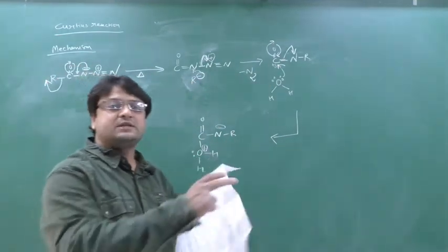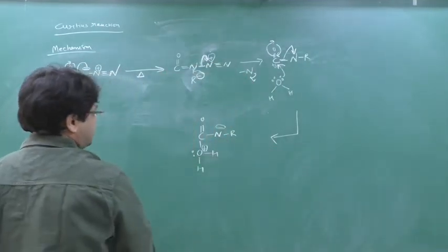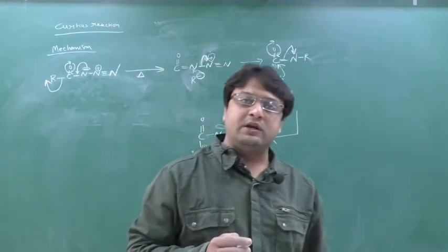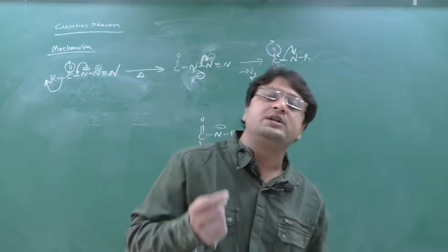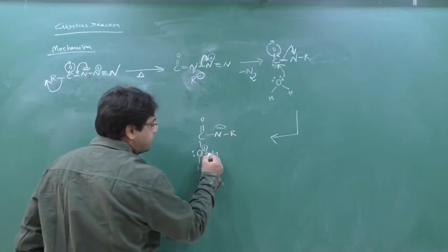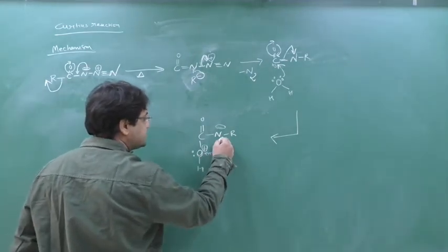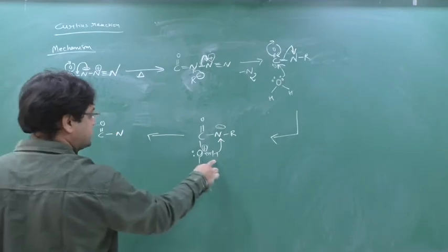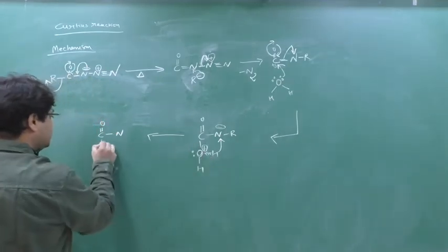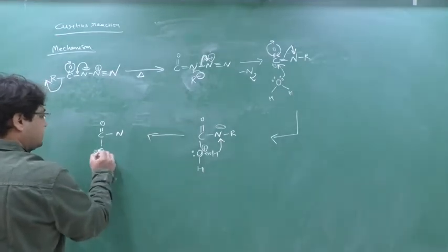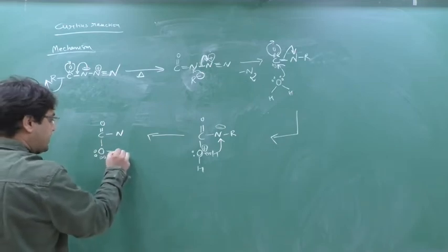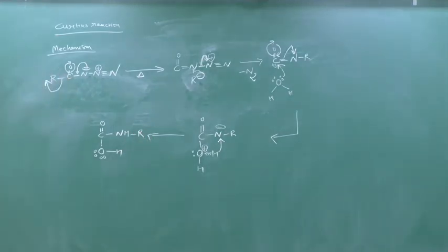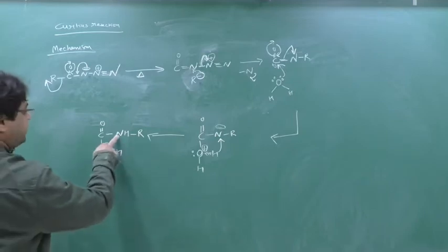Now oxygen has a positive charge, but oxygen is electronegative so it is unstable. It attracts electron from H, removing H⁺. The H⁺ attaches to nitrogen, and oxygen becomes stable with a double bond. Now nitrogen has three bonds — one, two, three — and oxygen has a double bond — all satisfied. But this O–H is still an acidic hydrogen.